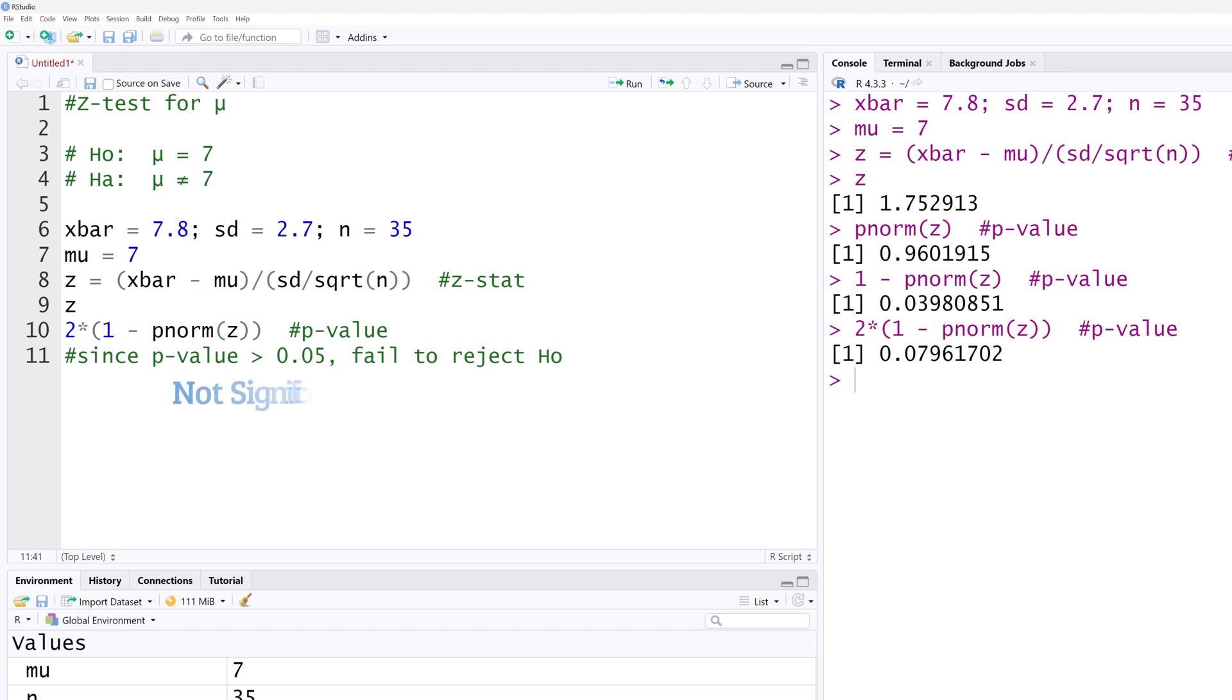In other words, the result is not significant. Note that the result will be significant at an alpha of 0.1, since this P value is less than 0.1.